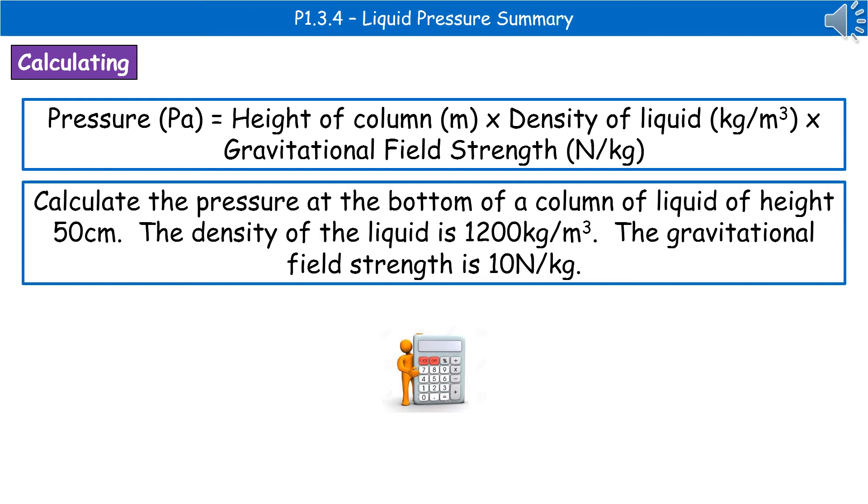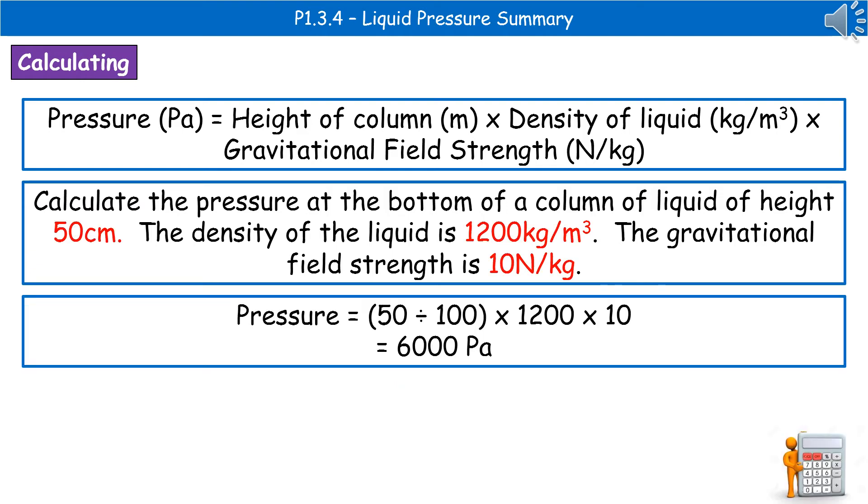So the kind of question we could get is calculate the pressure at the bottom of a column of liquid of height 50 centimeters. Density of the liquid is 1,200 kilograms per meters cubed, and the gravitational field strength is 10 newtons per kilogram. First thing we should always do is highlight, circle, underline, jot down those key numbers that we're going to be using in our calculation. So I've highlighted them in red for you there in the question.